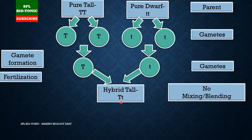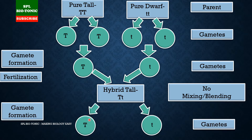During the process of fertilization, alleles come together. They remain together without mixing. Capital T is just masking the effect of small t — capital T is expressed and small t is suppressed. This is the law of dominance.